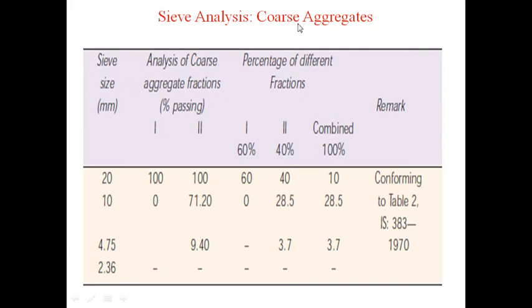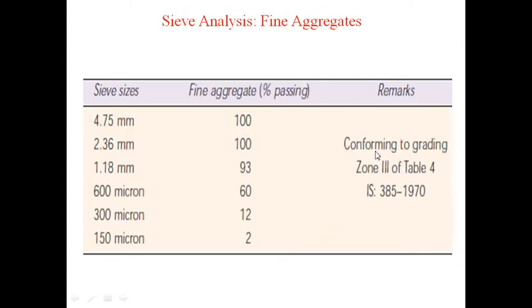Sieve analysis for coarse aggregate confirms to Table 2 of IS 383:1970. Here 60% are 20 mm and 40% are 10 mm, combined making 100%. Sieve analysis of fine aggregates shows that the sand confirms to grading zone 3 of Table 4 of IS 383:1970.